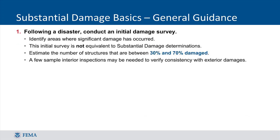For Substantial Damage Determinations, an initial survey will need to be completed first. This is done to estimate the number of structures in the range of 30% to 70% damaged. The percentage is the ratio of repair cost to market value of the structure. This survey should track and record structures that are not substantially damaged (under 30%) and those that are definitely substantially damaged (over 70%). The initial survey may be completed as a windshield survey without interior inspections, as long as inspectors have a good feel for the extent of damage in the survey area.